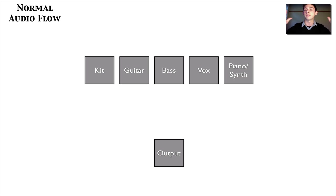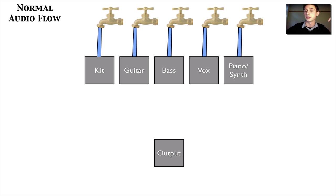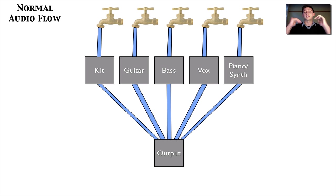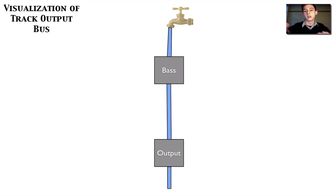So let's start. Imagine a song. This song only has five tracks: kick, guitar, bass, vocals, and piano and synth, as you can see visualized here. Then there's an output. We're going to be visualizing sound and volume throughout the rest of this tutorial as a flow of water. So we're going to have our spouts and we're going to have our water flowing into these tracks. By default, the output of these tracks are going to be sent to the stereo output of our song, of our Logic project, and that's going to be sent to our speakers. So in a normal audio flow, this is what's going on without any bussing, without any auxiliary. This is just as reference so that when we get into bussing right now, you know what's going on.